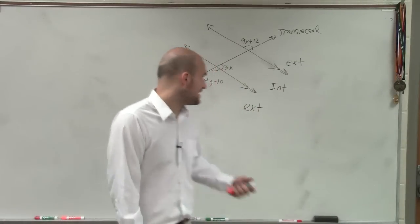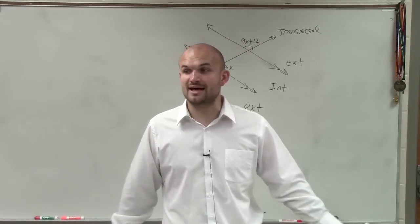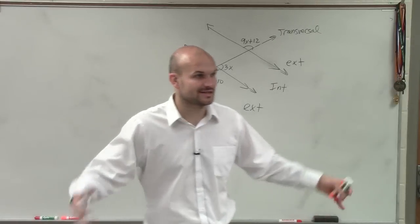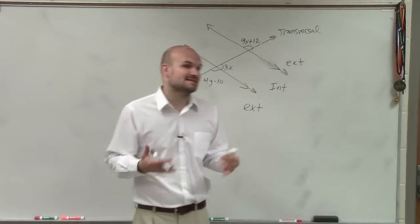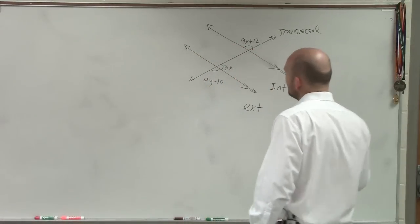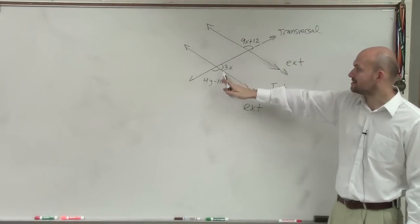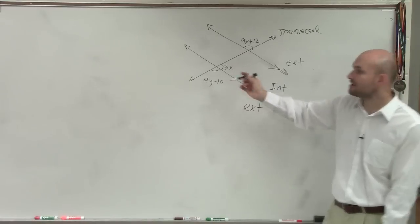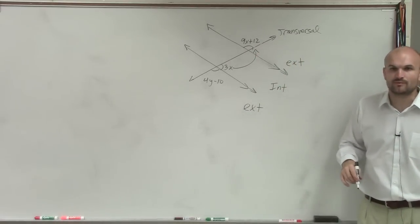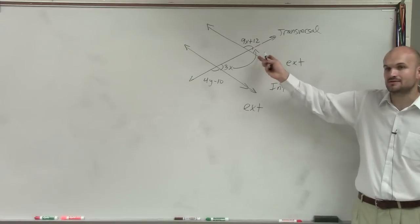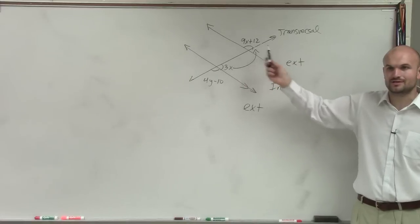So if you look at this, I have one interior and one exterior. So let's forget about alternate exterior and alternate interior. Let's look at corresponding. Corresponding is: one angle is interior, one angle is exterior, but the problem with corresponding is they have to be in the exact same place of the intersection. Notice how this one's on the right-hand side. So if these were corresponding angles, I would have to say that angle is going to be — how are these two angles related to each other?